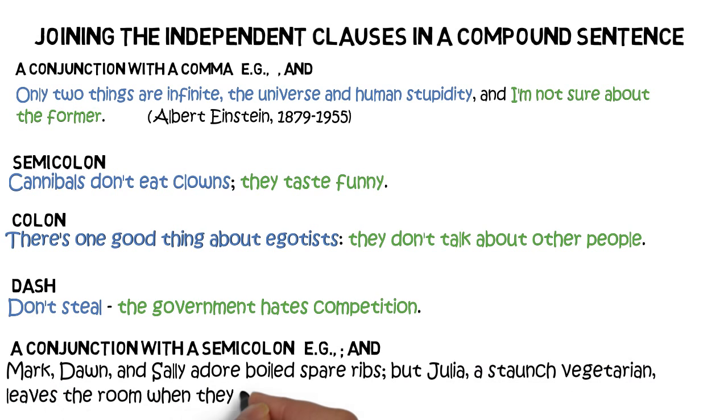And then we've got the very rare one. A conjunction with a semicolon. Mark, Dom, and Sally adore boiled spare ribs. But Julia, a staunch vegetarian, leaves the room when they're on the menu.